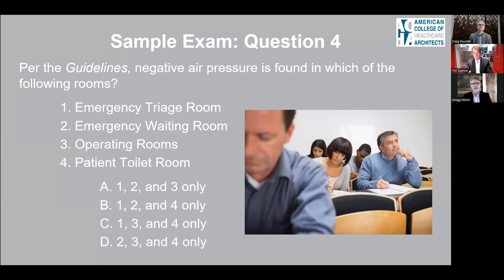Sample question number four: Per the guidelines — which are very important and give us a lot of information to design around — negative air pressure is found in which of the following rooms? It's a multiple choice question with four options: one, emergency triage; two, emergency waiting; three, the operating room; four, the patient toilet room. This goes beyond application into analysis — you need to know what has to happen in each room to understand what the air pressure and air balance is for that space.